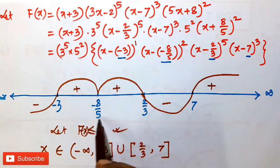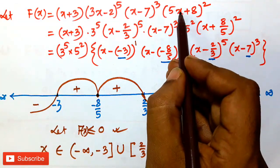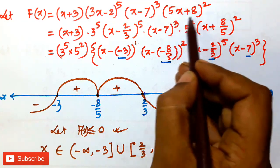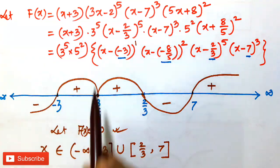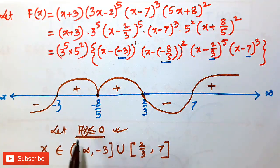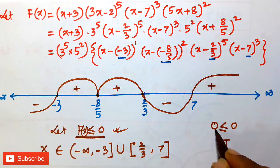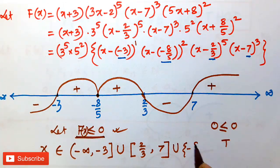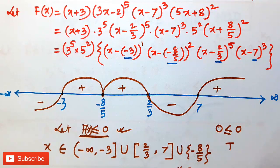There is another important point: the critical point −8/5. If you put x = −8/5, this part becomes 0 and the total expression becomes 0, meaning f(x) = 0. Since we were given f(x) ≤ 0, and 0 ≤ 0 is true due to the equality sign, we must include this point. So x = −8/5 is also a solution. If you face any problems, please rewind the video and leave comments. Thank you.